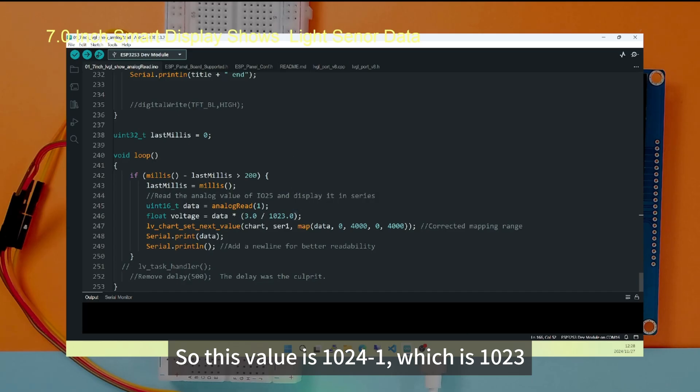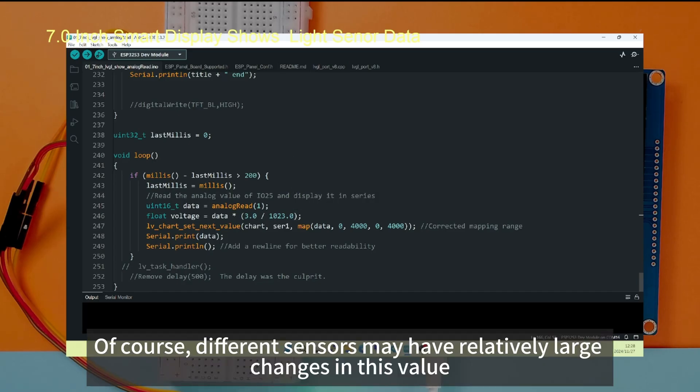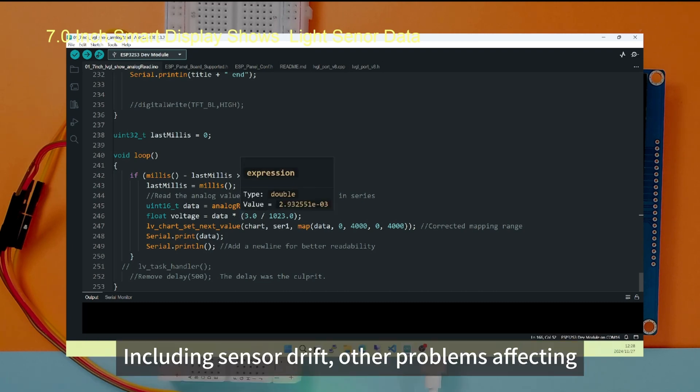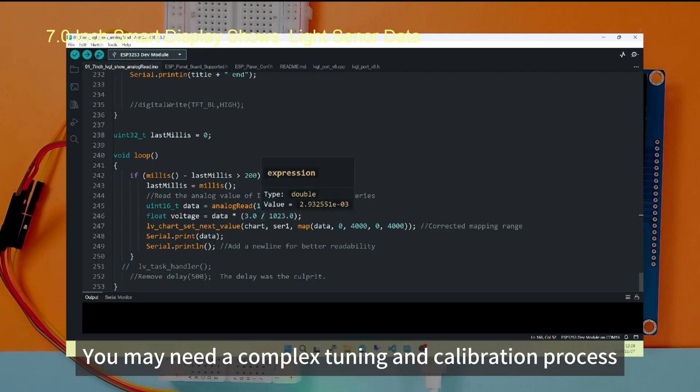Of course, different sensors may have relatively large changes in this value, including sensor drift, other problems affecting. You may need a complex tuning and calibration process.